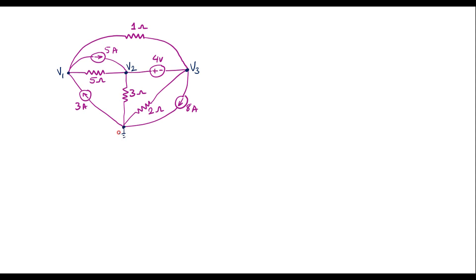In node voltage analysis, first we have to mark all branch currents. Let me assume current through this branch is I1, current through this branch is I2, current through this branch is I3, and current through this branch is I4. Here we have current sources as well.